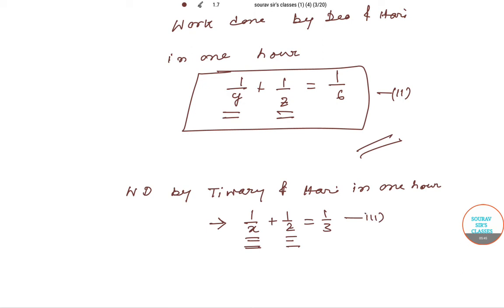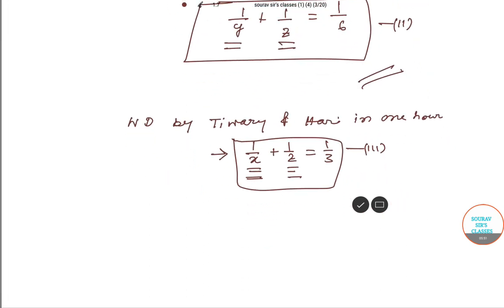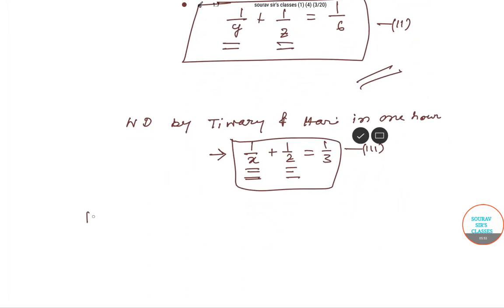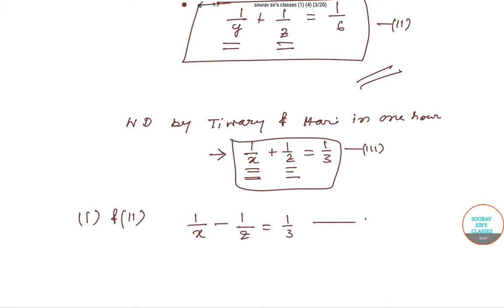From Equations 1 and 2, we can derive: 1/X − 1/Z = 1/3. We label this as Equation 4.